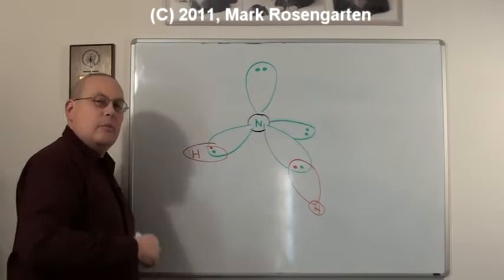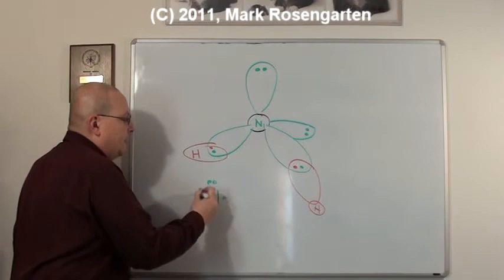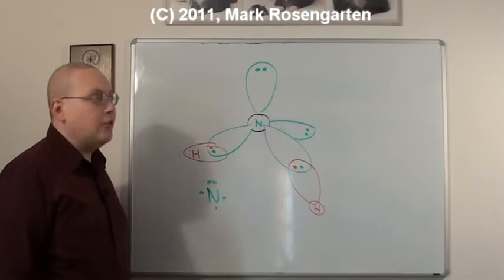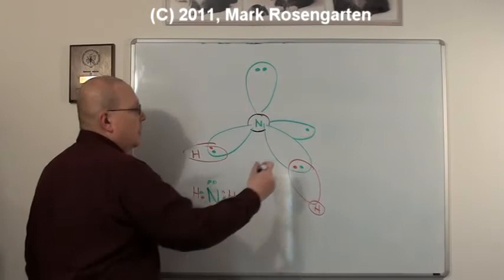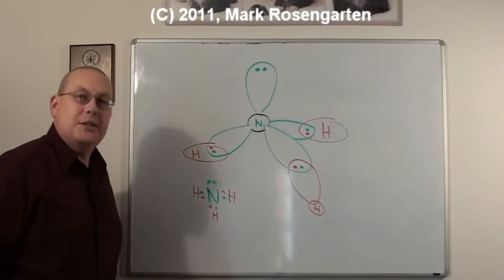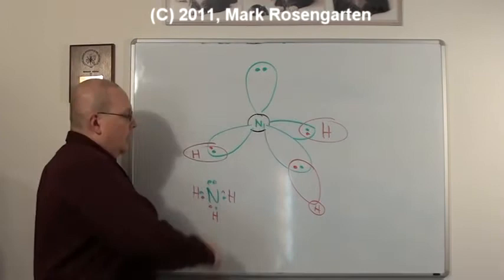If we have nitrogen, nitrogen has five valence electrons. One lone pair and three unpaired electrons. One lone pair and three unpaired electrons. So that when hydrogen bonds to it, that lone pair forces the molecule into a trigonal pyramidal form.